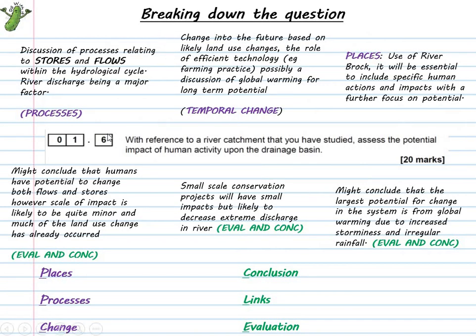Let's break down the question: With reference to a river catchment that you've studied, assess the potential impact of human activity upon the drainage basin. This question comes from water and carbon, specifically the water section. It's all about impact of human activity upon the drainage basin. Looking at how we as humans might impact or change the processes that occur—stores, flows, potentially inputs and outputs. So straight away, AO1 process: I want to be using some of those key terms within my answer.